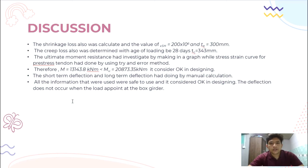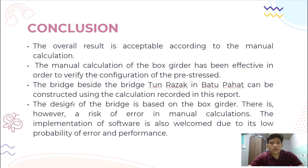The shrinkage loss was calculated and the creep was also accounted for with H of concrete at B28. The ultimate moment resistance was determined using a stress-strain curve via the trial-and-error method, and the design is considered okay. The short-term and long-term deflections were calculated manually and verified using software, both considered acceptable. The overall results are acceptable according to the manual calculation. The manual calculation has been verified to confirm the prestress configuration. The bridge at Tun Razak in Batu Pahat can be constructed using the configuration required in this report.